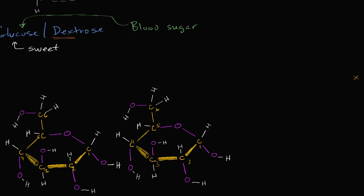What we're going to explore is what would happen if this oxygen — highlighted in magenta — were to use one of its lone pairs to perform a nucleophilic attack on the number one carbon of the left-hand glucose molecule. This can happen because that number one carbon is attached to two oxygens, which are very electronegative and hog electrons in a covalent bond, giving the carbon a partially positive charge. Meanwhile, this oxygen is electronegative and hogs electrons from the hydrogen and the number four carbon on the right-hand glucose molecule, giving it a partially negative charge — making it nucleophilic, attracted to the partially positive carbon.